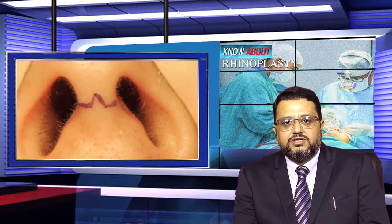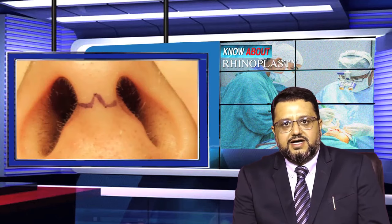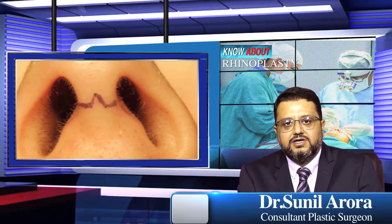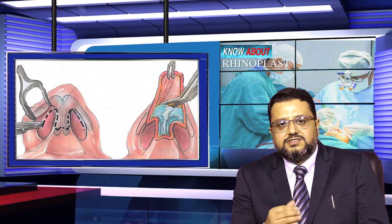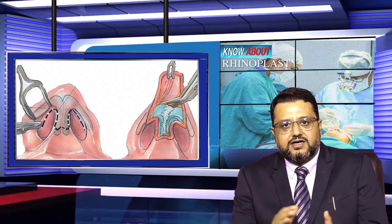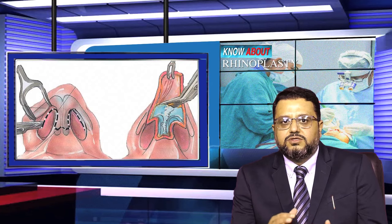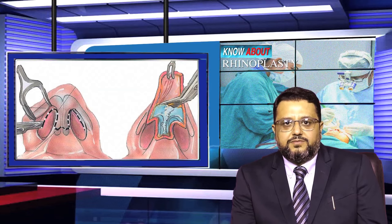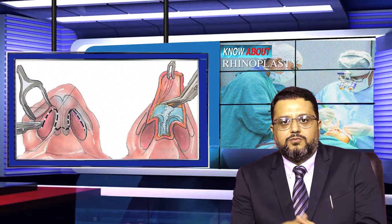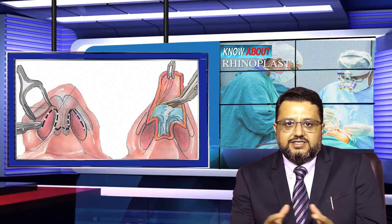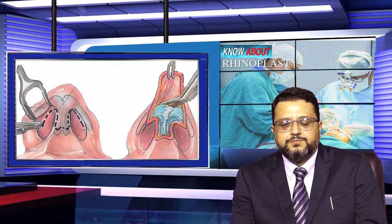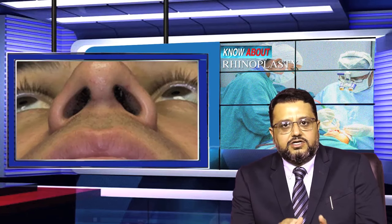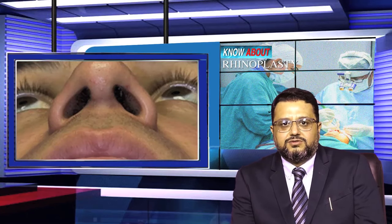Doosri technique hai external rhinoplasty, jisme jo cut lagaya jata hai woh naak ke bilkul chhupe hue hisse mein, skin ke sabse patle hisse pe lagaya jata hai. Wahaan se naak ko poora expose karke naak ka jo skeletal architecture hai usse expose karke corrections ki jaati hain. External approach tab prefer ki jaati hai jab naak ke kai components mein issues ya concerns hon aur unhein ek saath correct karna ho. Jo cut hota hai woh kuch mm ka hota hai aur 3-6 mahine baad naak ke barabar visible hota hai.